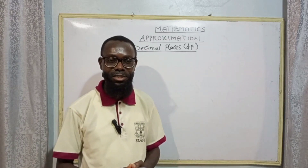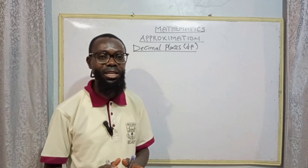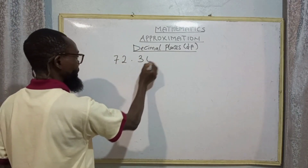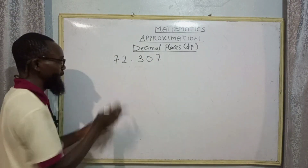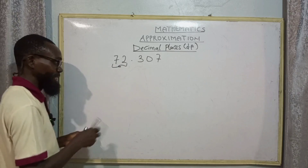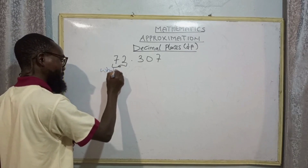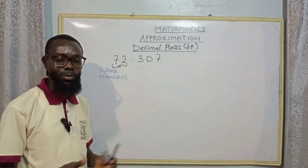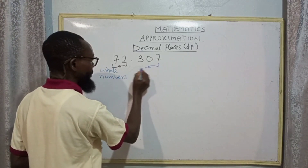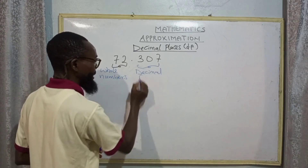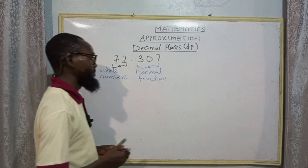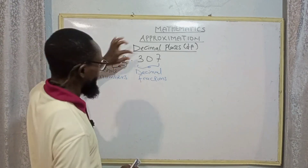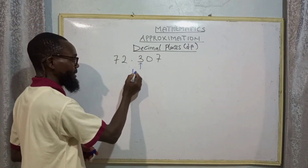Decimal places mean the number of digits after a decimal point. When we have a value like 72.307, the first part before the decimal point is referred to as whole numbers — these are numbers without decimal points. The digits after the decimal point are referred to as decimal fractions. So we have the whole number part and the decimal fraction part.